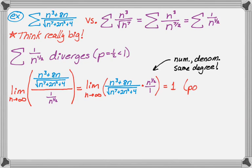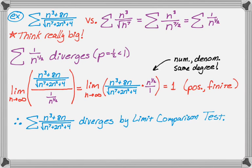Since the limit is positive and finite, and the constructed series diverges, the given series diverges by the limit comparison test. You have to know what your constructed series does and you have to be able to take the limit — those are the two things outright required here.